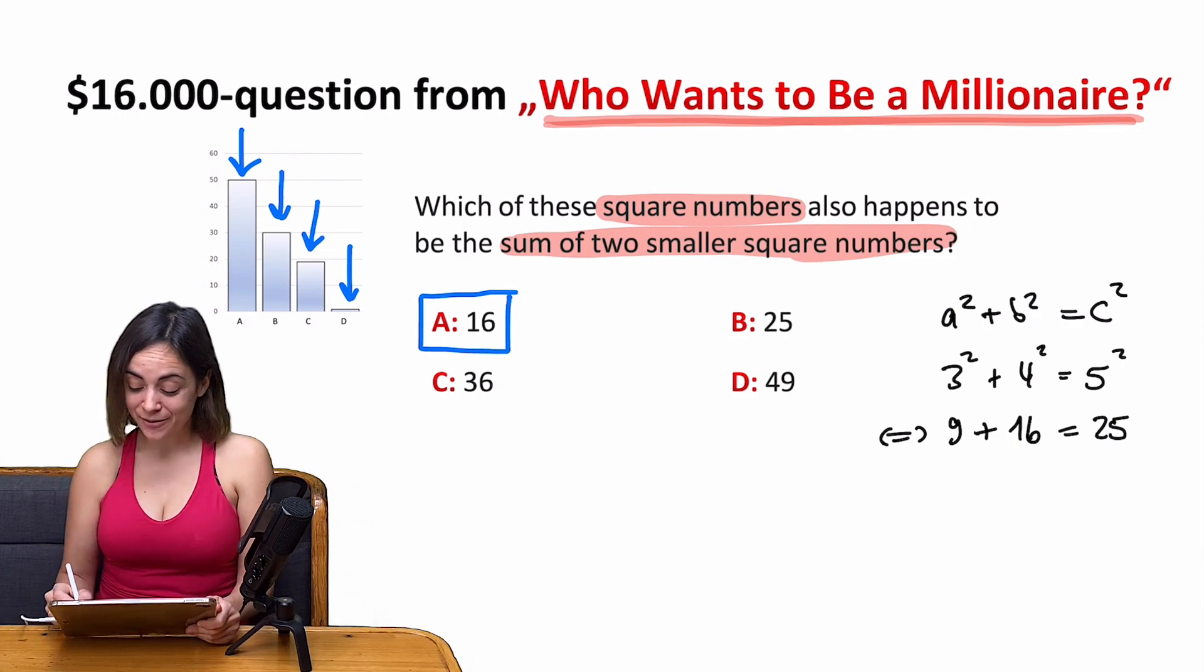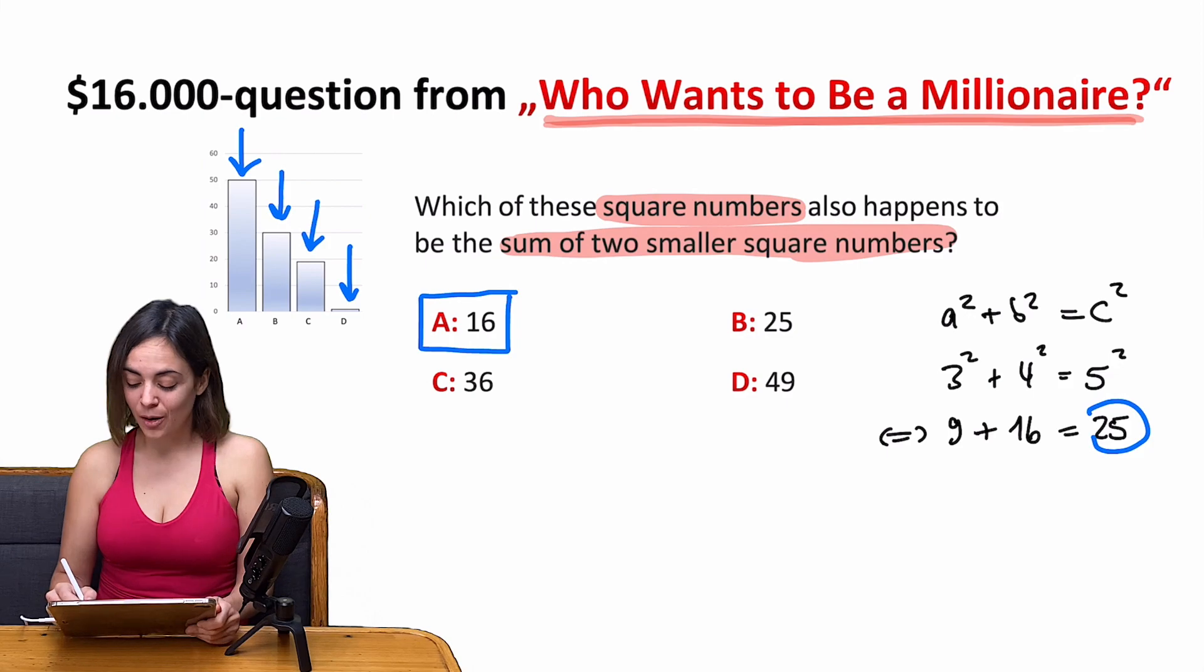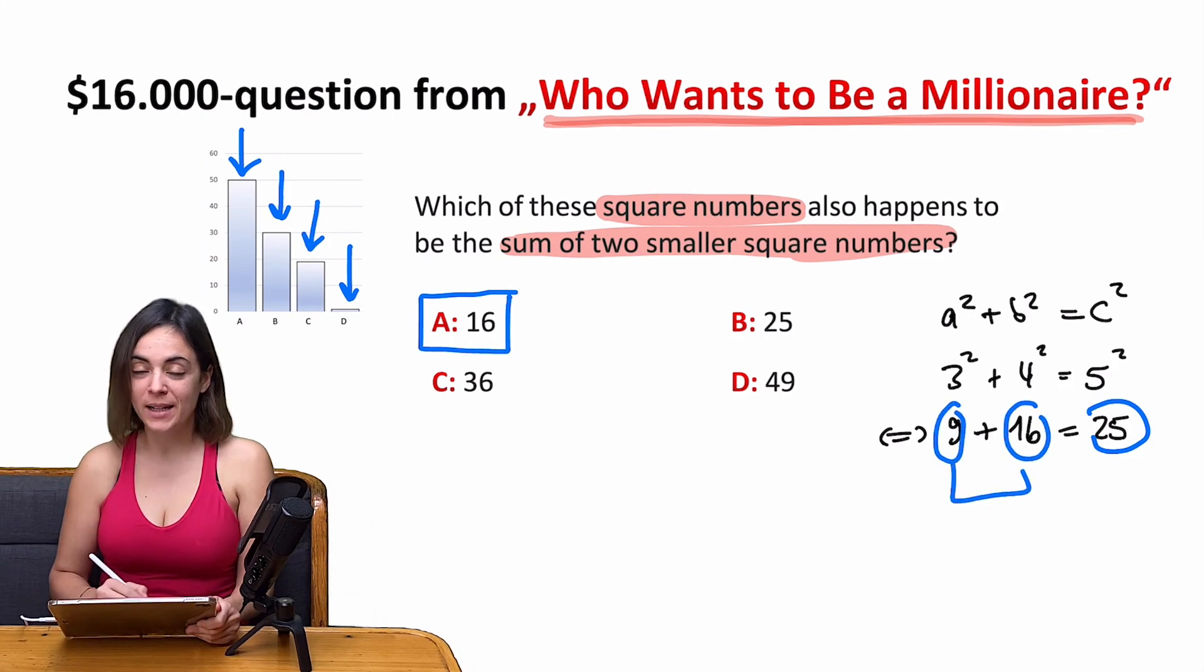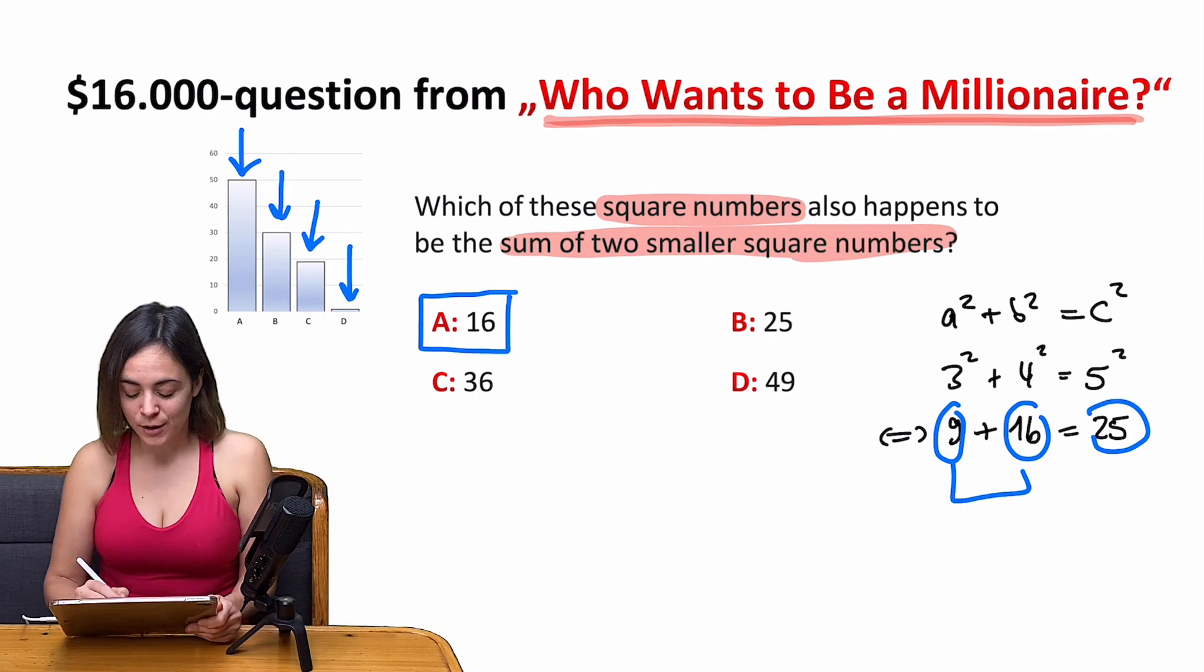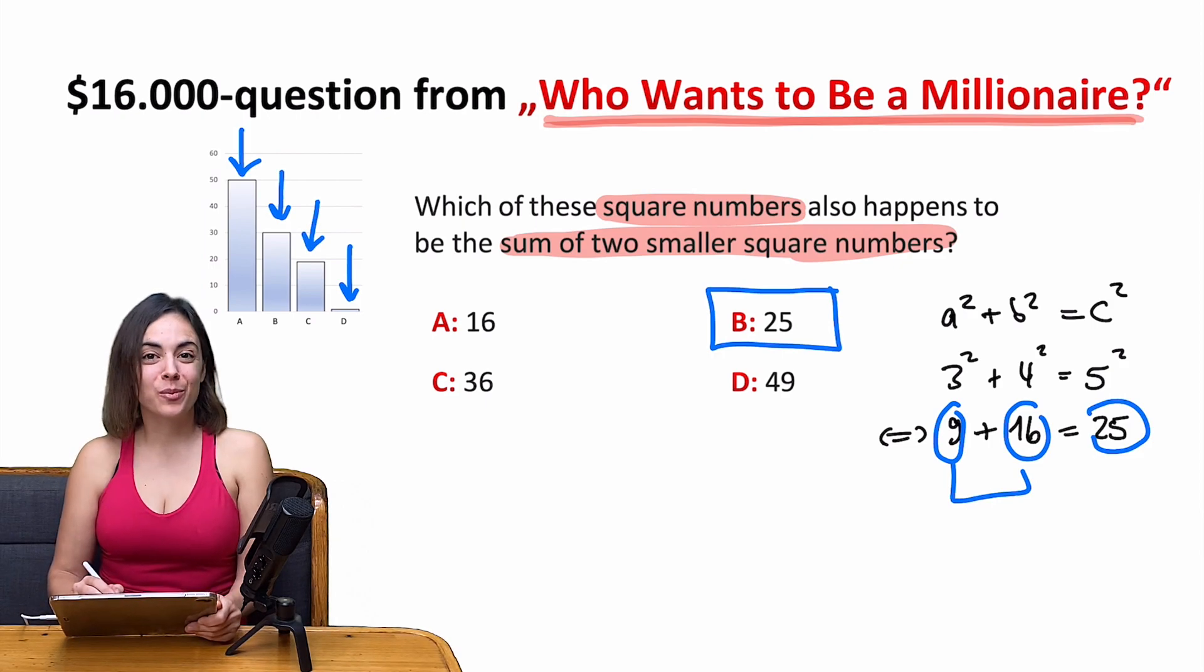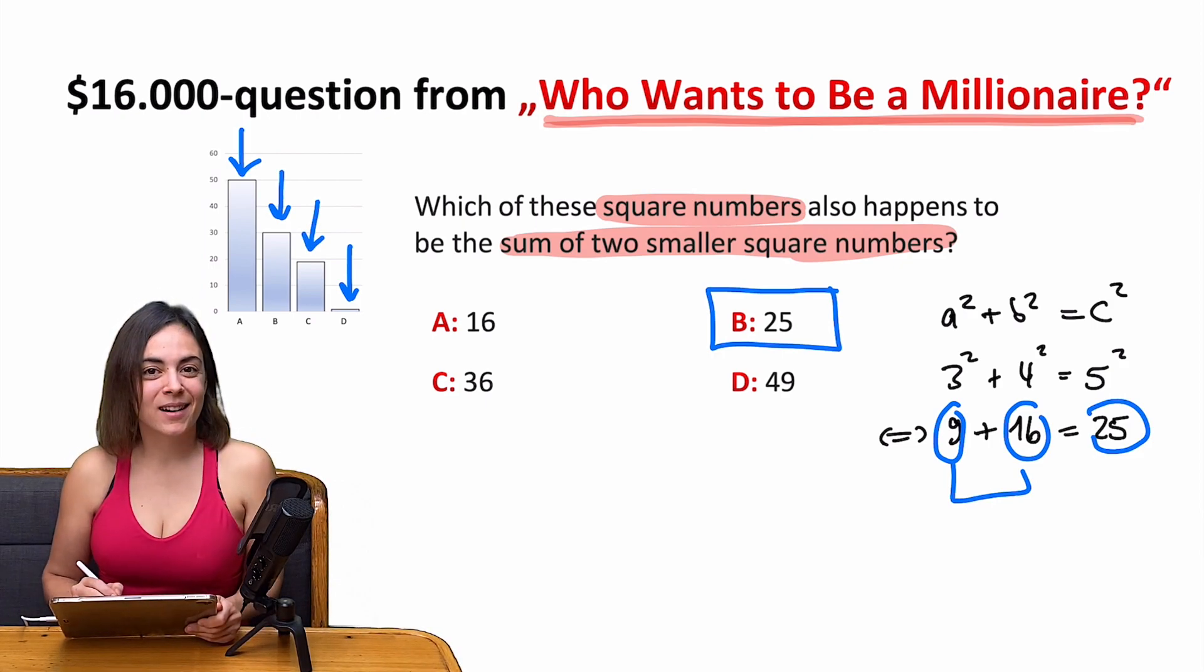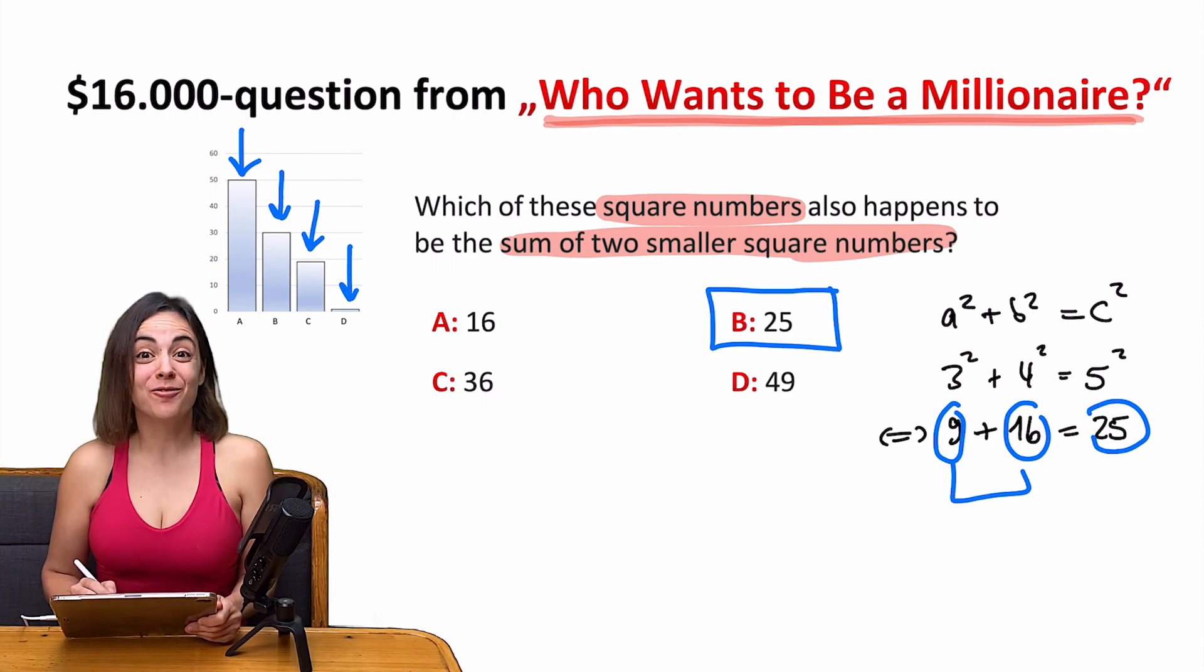So 25 can be written as the sum of two smaller square numbers, which are 9 and 16. So B is the correct answer. And now we all know what we can respond to pupils that are asking us what the Pythagorean theorem would be good for in real life.